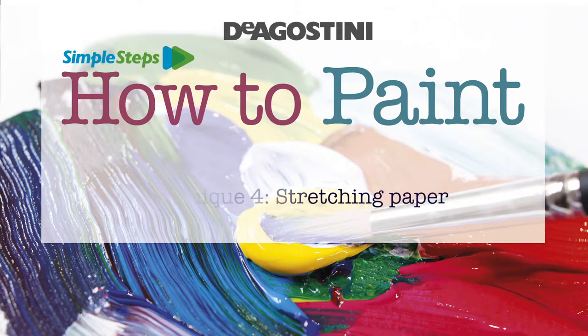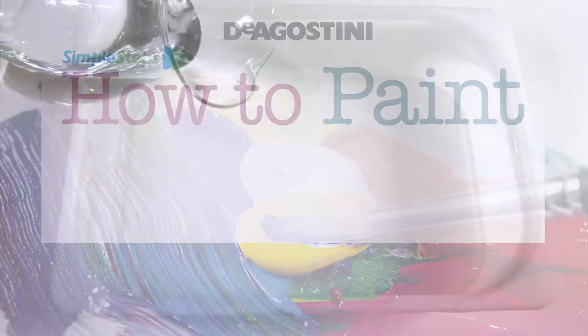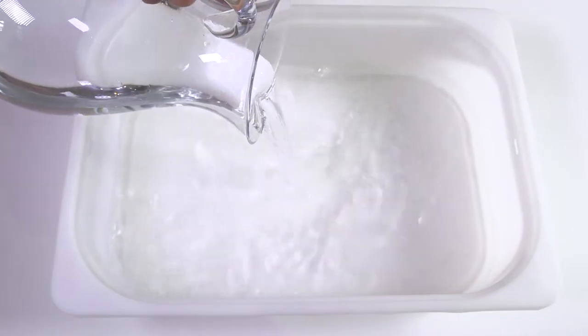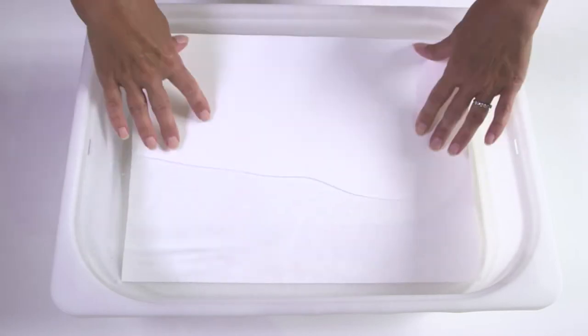Stretching paper. Fill a large sink or bowl with cold water and submerge the sheet of sized paper for between 5 and 15 minutes depending on its thickness.